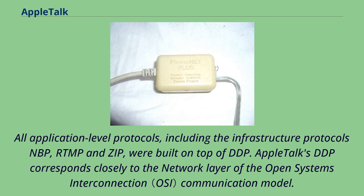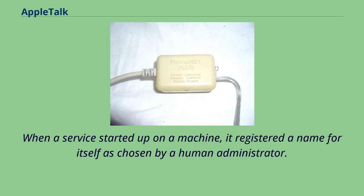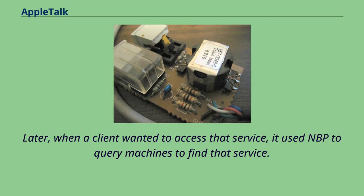Name Binding Protocol was a dynamic, distributed system for managing AppleTalk names. When a service started up on a machine, it registered a name for itself as chosen by a human administrator. NBP provided a system for checking that no other machine had already registered the same name. When a client wanted to access a service, it used NBP to query machines to find that service. NBP provided browsability as well as the ability to find a service with a particular name. Names were human-readable, containing spaces, upper and lowercase letters, and including support for searching.